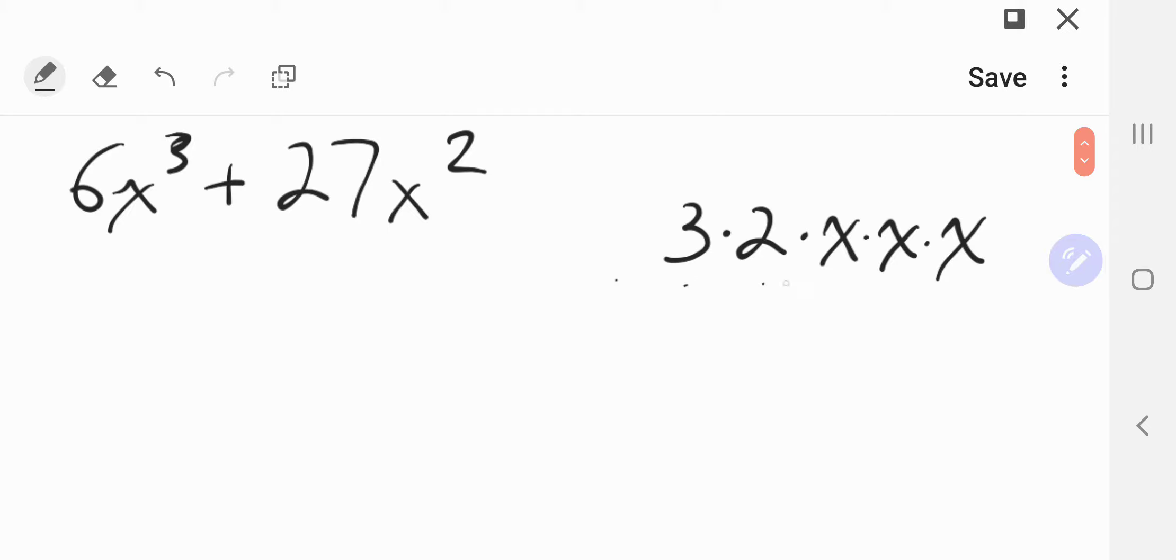So 3 times 2 times x times x times x, that's another way of writing 6x cubed. It's writing out all the pieces that are going into it. Factoring is another word for undistributing. We're going to pull some things out, un-multiply them out of there. Let's look at the 27.